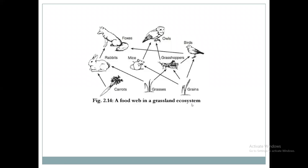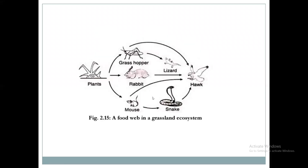Another image shows the food web in a grassland ecosystem. The first producer will be consumed by grasshopper, rabbit, and mouse — there are three primary consumers and the plant is the producer. The grasshopper will be consumed by lizard, mouse will be consumed by snake or hawk, rabbit will be consumed by hawk, and snake will be consumed by hawk. So the hawk depends upon grasshopper, lizard, snake, mouse, and rabbit — it depends upon several organisms.